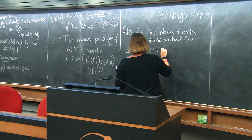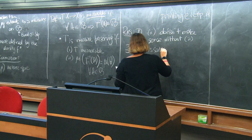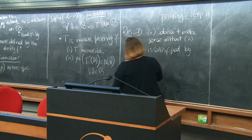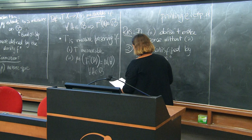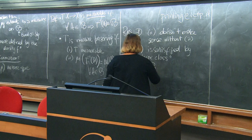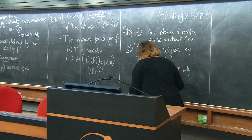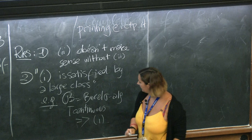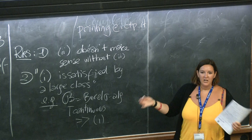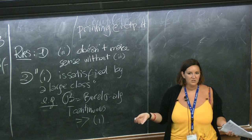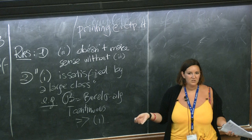Second remark: point one is not very restrictive because it is satisfied by a large class of transformations. To convince you, if we take the Borel sigma algebra and T is continuous, then this implies that T is measurable. So there are uglier transformations, but a lot of natural transformations — in particular the ones we are thinking about mostly this week — they all satisfy point one.